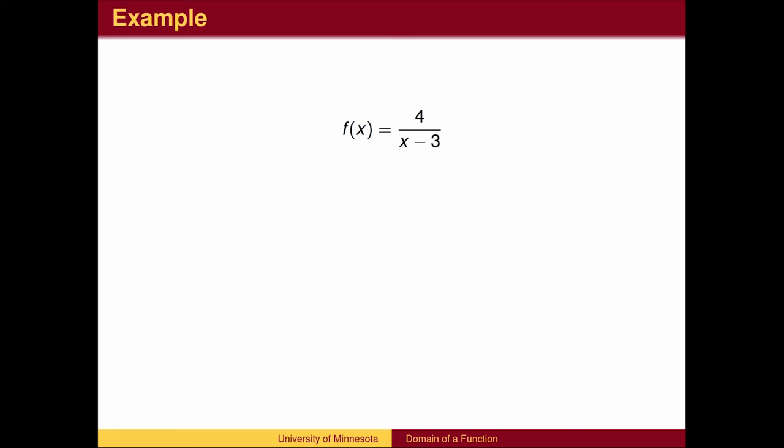Occasionally, the function is a bit more complicated, but the same principles apply. For this function, the denominator cannot be 0, but the denominator is more complicated than the single variable x. We need to solve an equation. The denominator x minus 3 cannot equal 0. Therefore, x cannot equal 3.